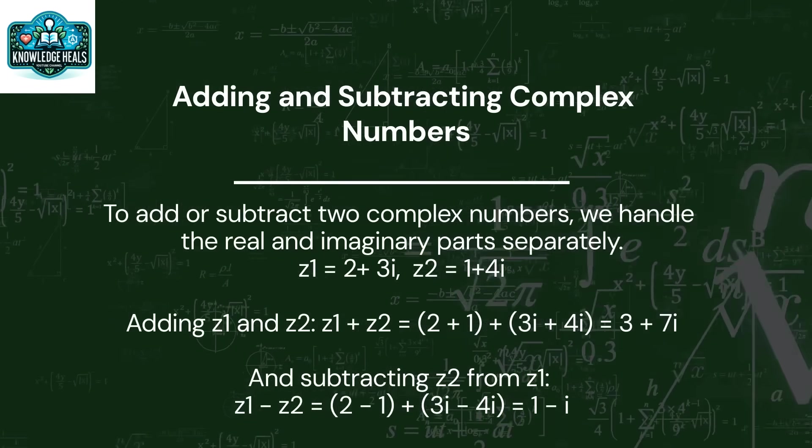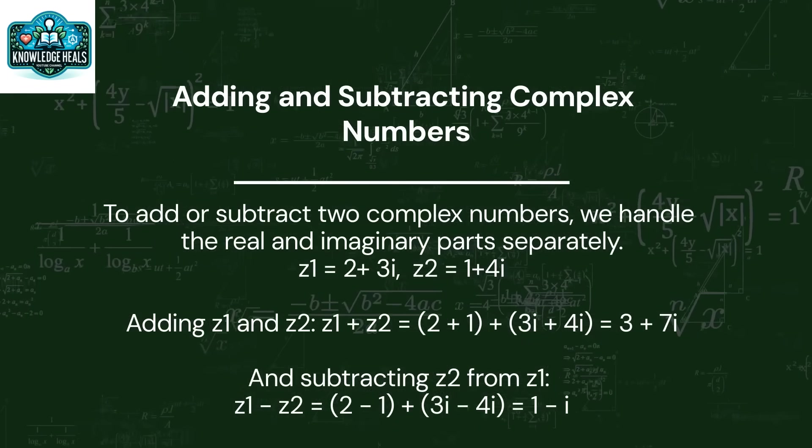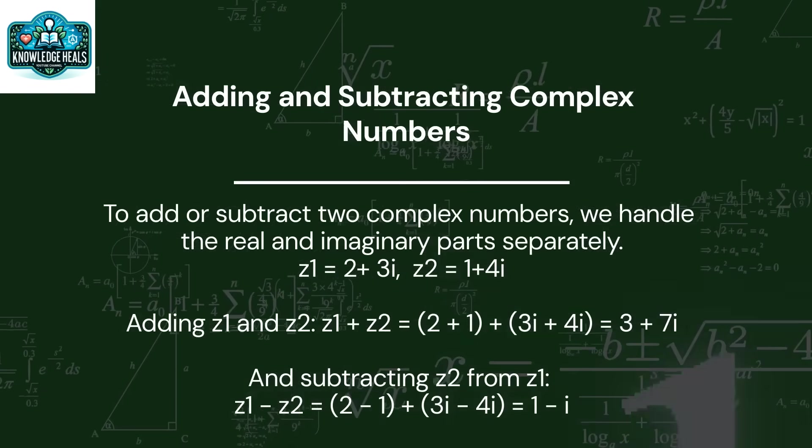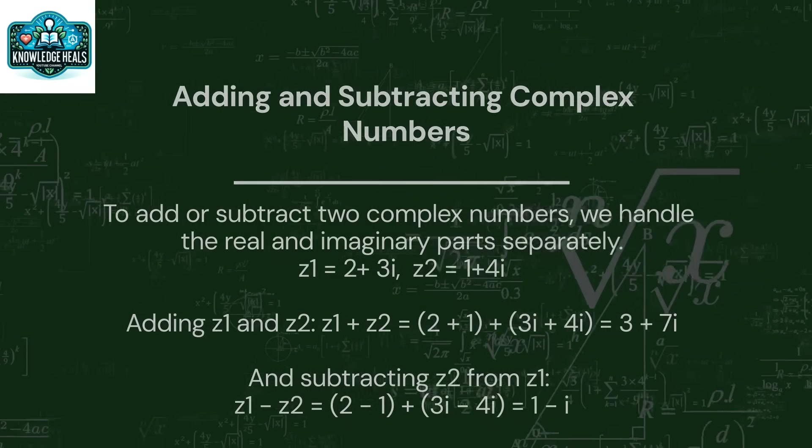And subtracting Z2 from Z1, Z1 minus Z2 equal to 2 minus 1 plus 3I minus 4I, which is equal to 1 minus I.